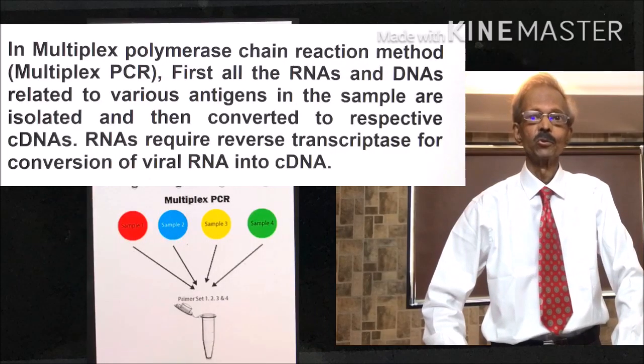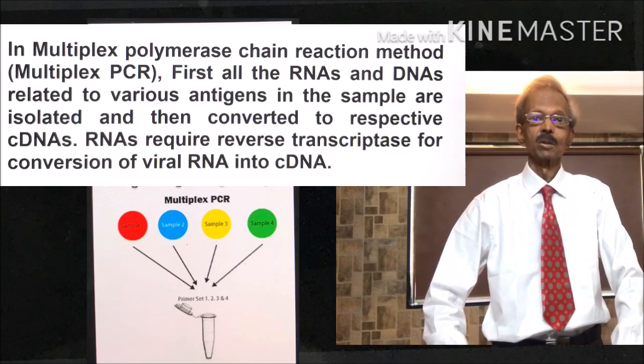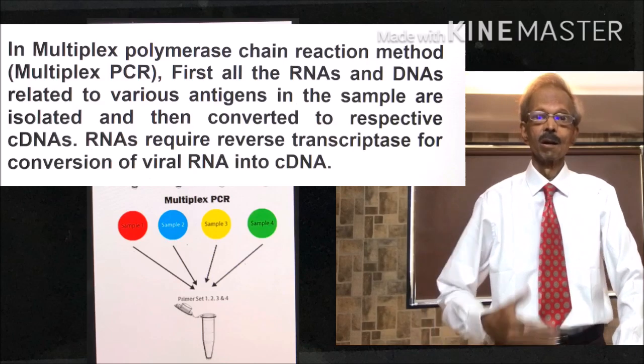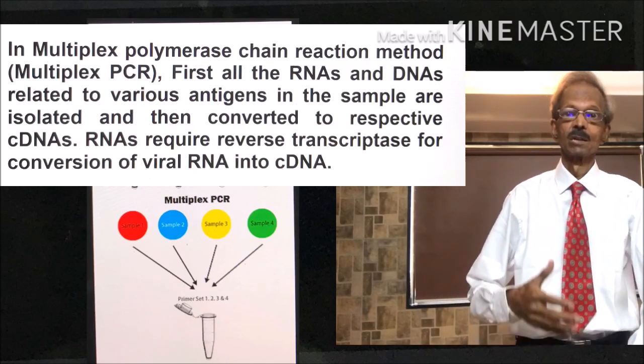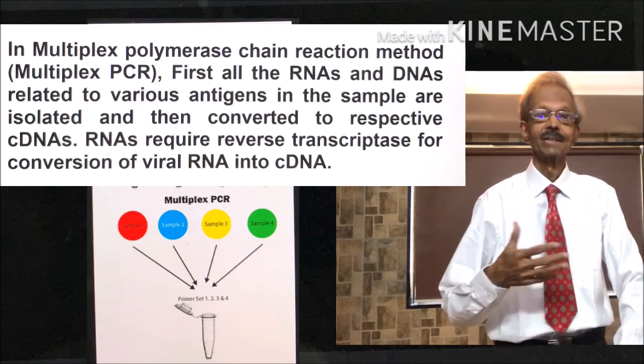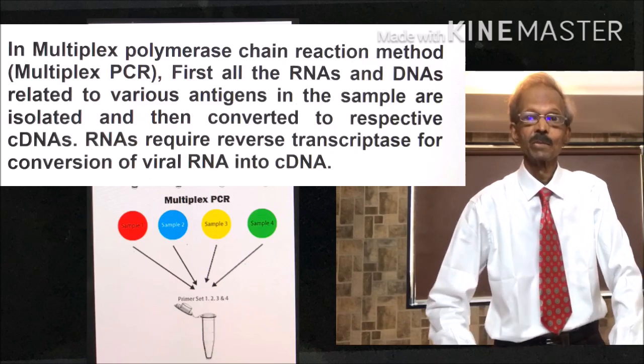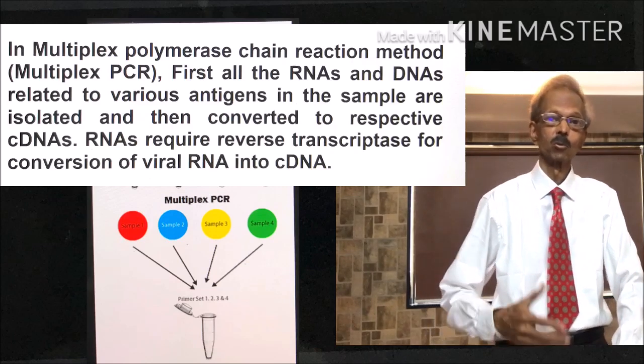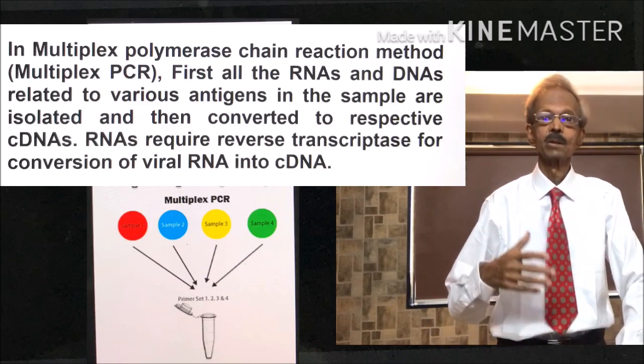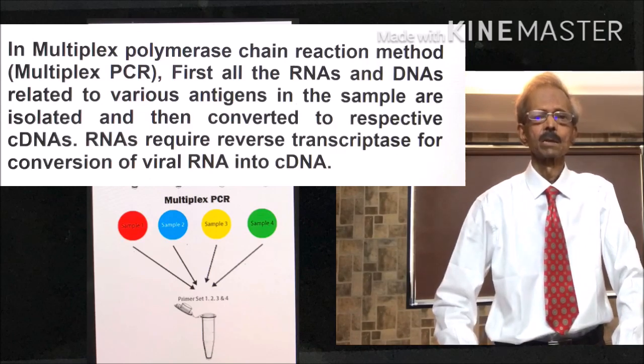In multiplex polymerase chain reaction method, first all the RNAs and DNAs related to various antigens in the sample are isolated and then converted to respective cDNAs. RNAs require reverse transcriptase enzyme for the conversion of viral RNA into cDNA.